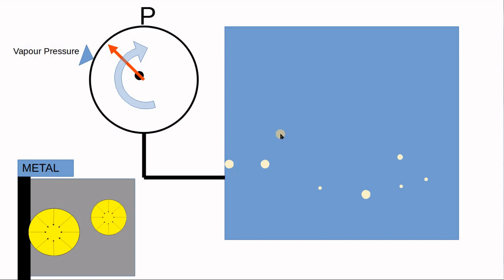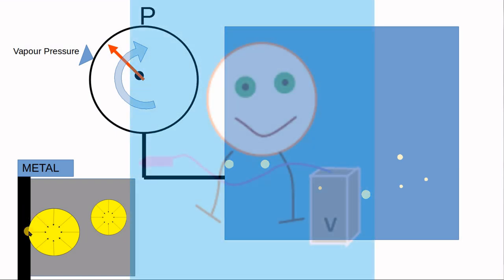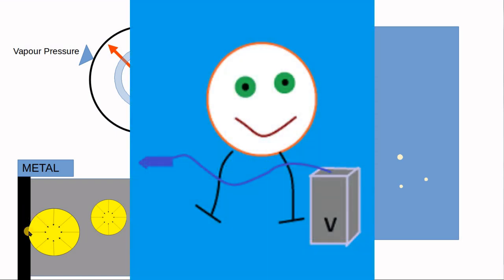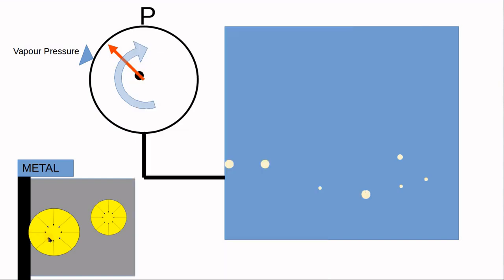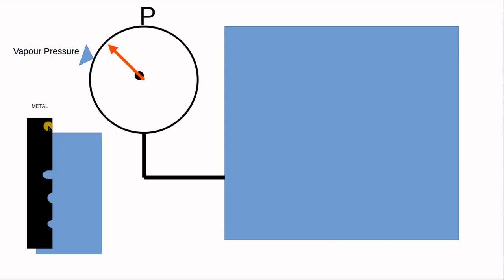If the bubble is surrounded by liquid, the liquid will come from all directions and fill the void. But if it is adjacent to a metal surface, you will have a vacuum beside the metal, which will force the metal into the vacuum — as if it is eating into your metal. At the end, if vapor collapses beside your metal, you will find a very rough surface because of the collapse of those bubbles.